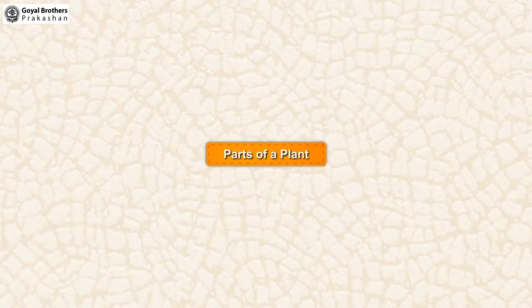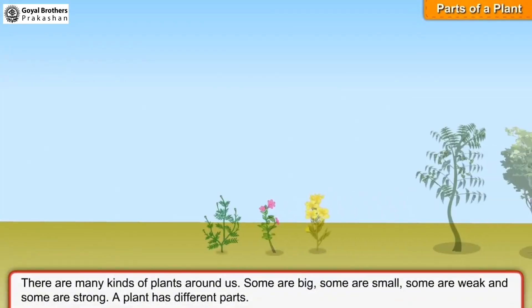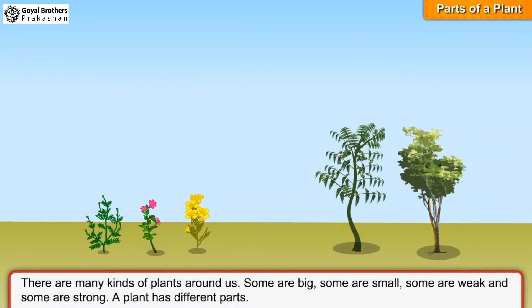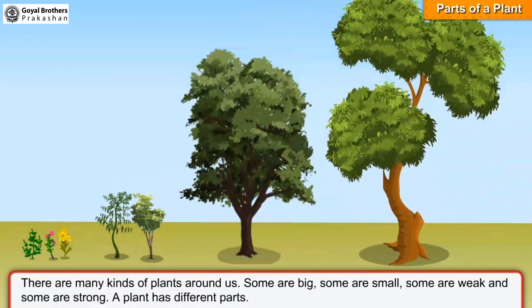Parts of a plant. There are many kinds of plants around us. Some are big, some are small, some are weak and some are strong.